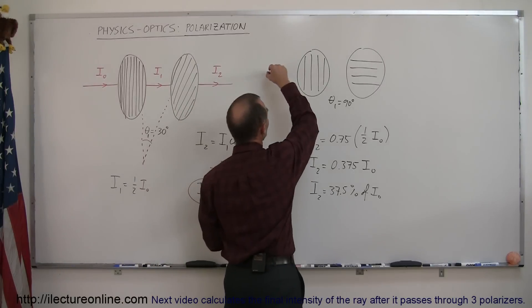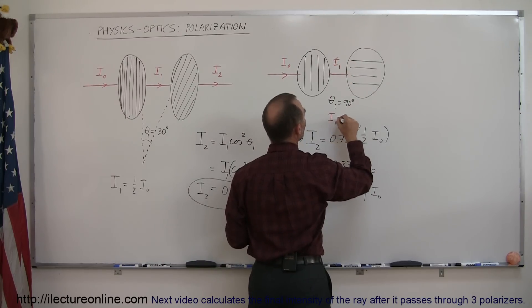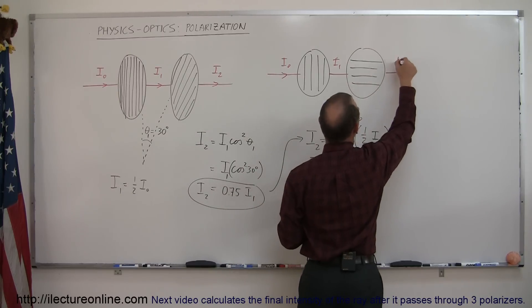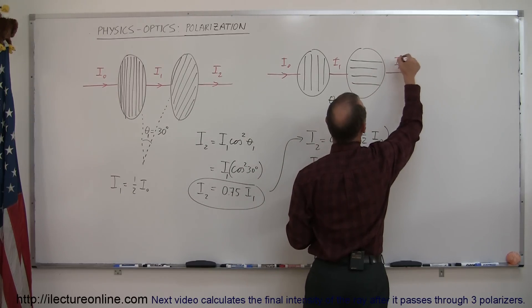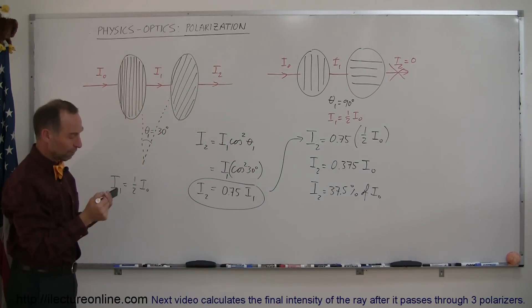So what we can then see is that if we had inbound light, which is i sub 0 in intensity, then i sub 1 would therefore be equal to one half i sub 0, but then through the second one, i sub 2 would be equal to 0. No light would make it through the second one if the second polarizer was perpendicular to the first one.